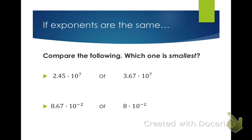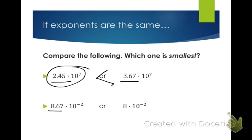As you can see, ten to the seventh and ten to the seventh are the same, and ten to the negative two and ten to the negative two are the same. So when we are doing this, all we have to do is compare the number in front. Obviously 2.45 is smaller than 3.67, so I'd put the less than symbol here. And if I'm looking at 8.67 and 8 — 8 is smaller because it's just 8, and 8.67 is getting closer to 9 — so 8.67 times ten to the negative second is greater than 8 times ten to the negative second.